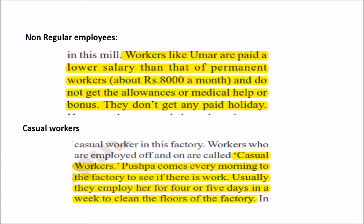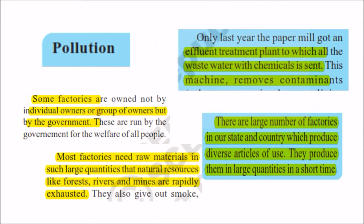Some factories are owned by individuals and some by the government. The government runs factories for the welfare of the people, providing employment opportunities and reducing unemployment. However, industries also have negative implications like pollution. Factories need raw materials in large quantities, causing natural resources like forests, rivers, and mines to be rapidly exhausted. Forests are disappearing because trees are cut regularly, and factories also release large amounts of smoke.